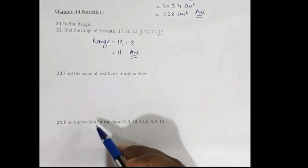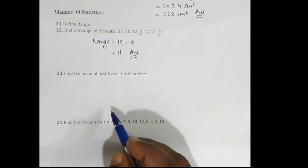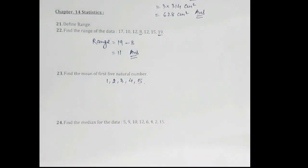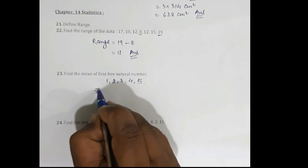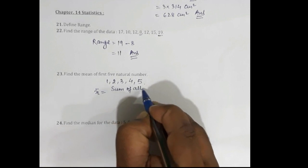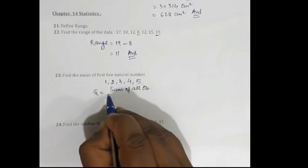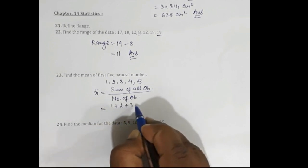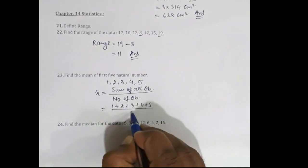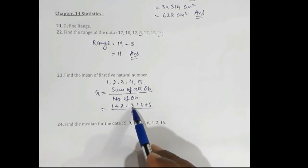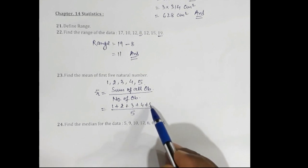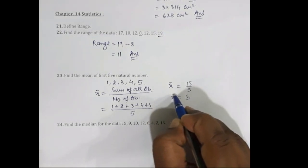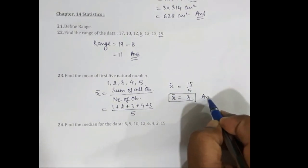Question 23: Find the mean of the first 5 natural numbers. The first 5 natural numbers are 1, 2, 3, 4, and 5. Mean x-bar = sum of all observations divided by number of observations = (1 + 2 + 3 + 4 + 5) / 5 = 15 / 5 = 3. The mean of the first 5 natural numbers is 3.